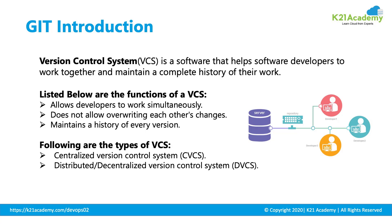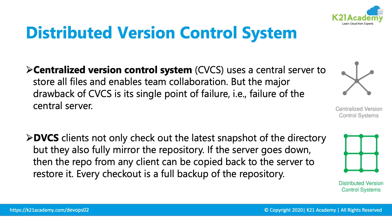There are two main version control systems in DevOps tools. One is the centralized version control system, and another is the decentralized or distributed version control system. A centralized version control system stores all files and collections in one main server, which is connected to multiple clients. If the main server connection is lost or has issues, all client connections will be lost and you will not be able to send or receive data.